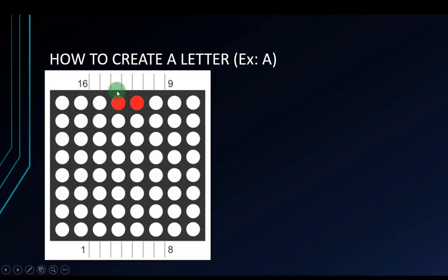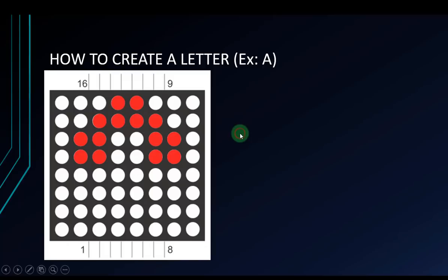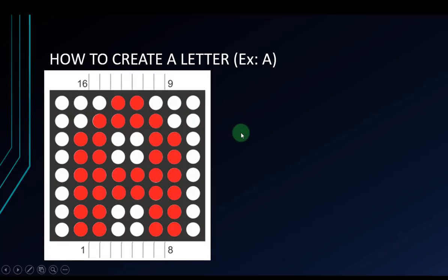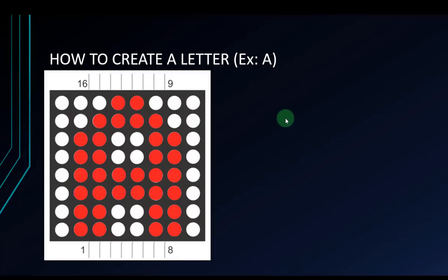First, I will turn on the LEDs in the first row at the same time using the method from the previous slide. Then I will turn on the second, third, fourth rows, and so on. I will turn on 8 rows to create this letter, one by one. But when I turn them on at fast speed, you cannot see any delay, and it will display the full letter — it cannot be seen as delayed if you set a fast enough speed.